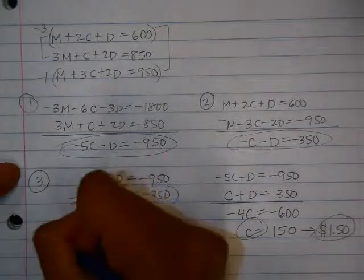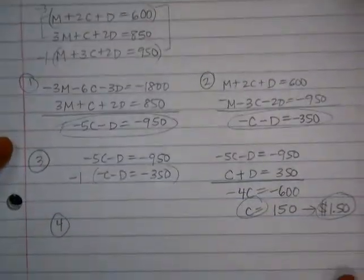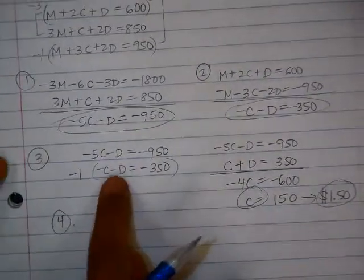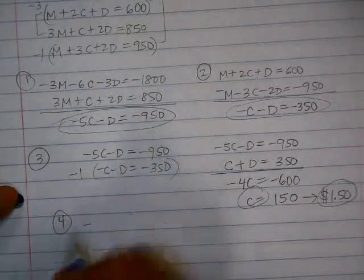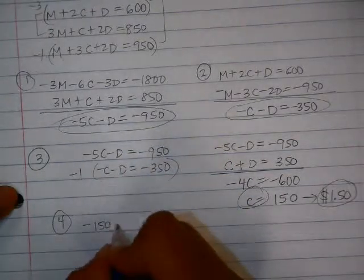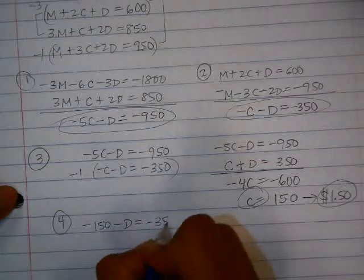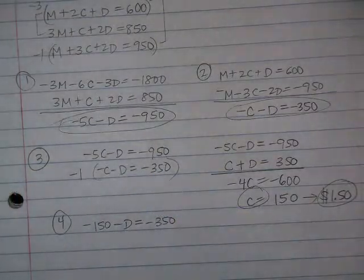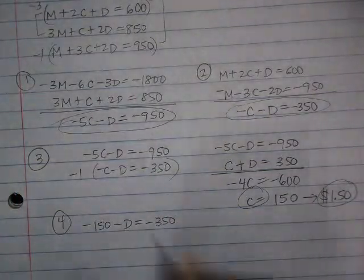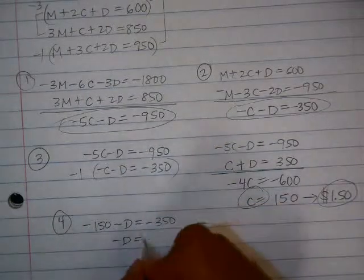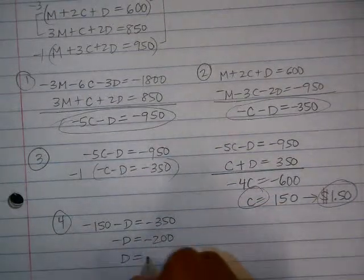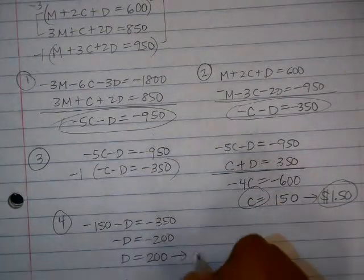The next step here is going to be to go back and solve for D. Here in this equation, I'm just going to plug back in. Negative C minus D equals negative 350. That would give me negative D equals negative 200. So D is 200, which is $2.